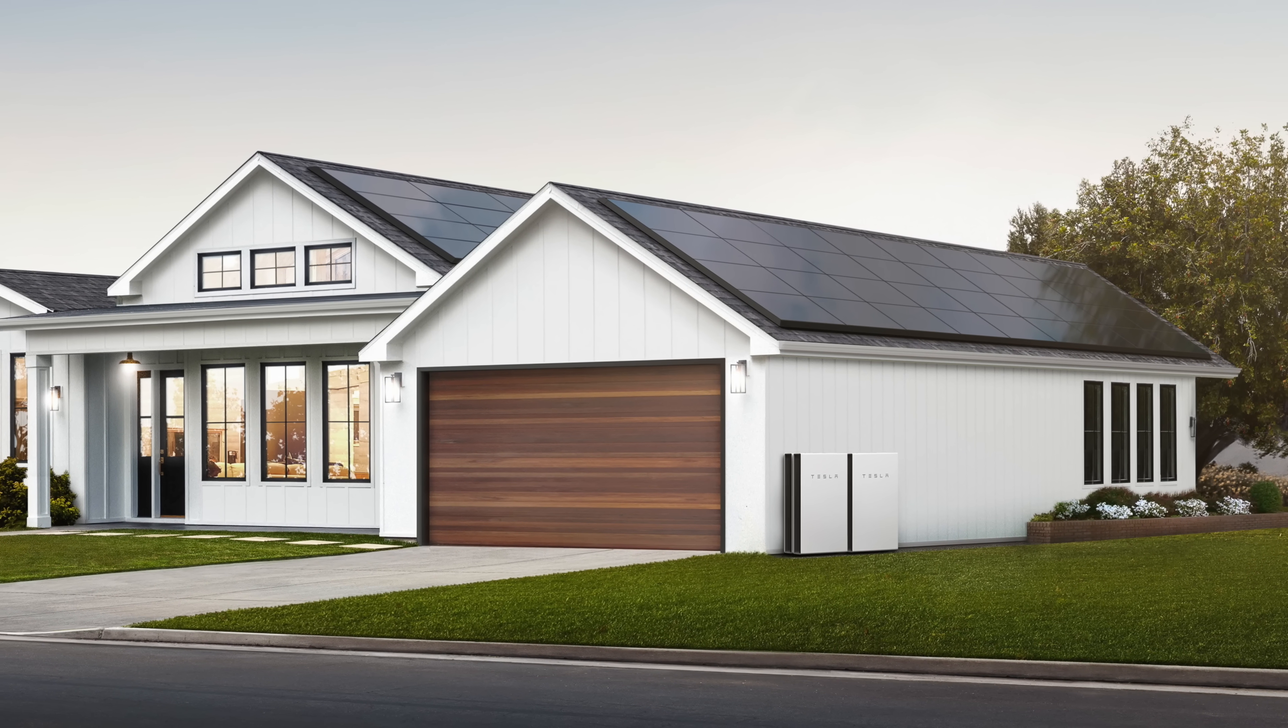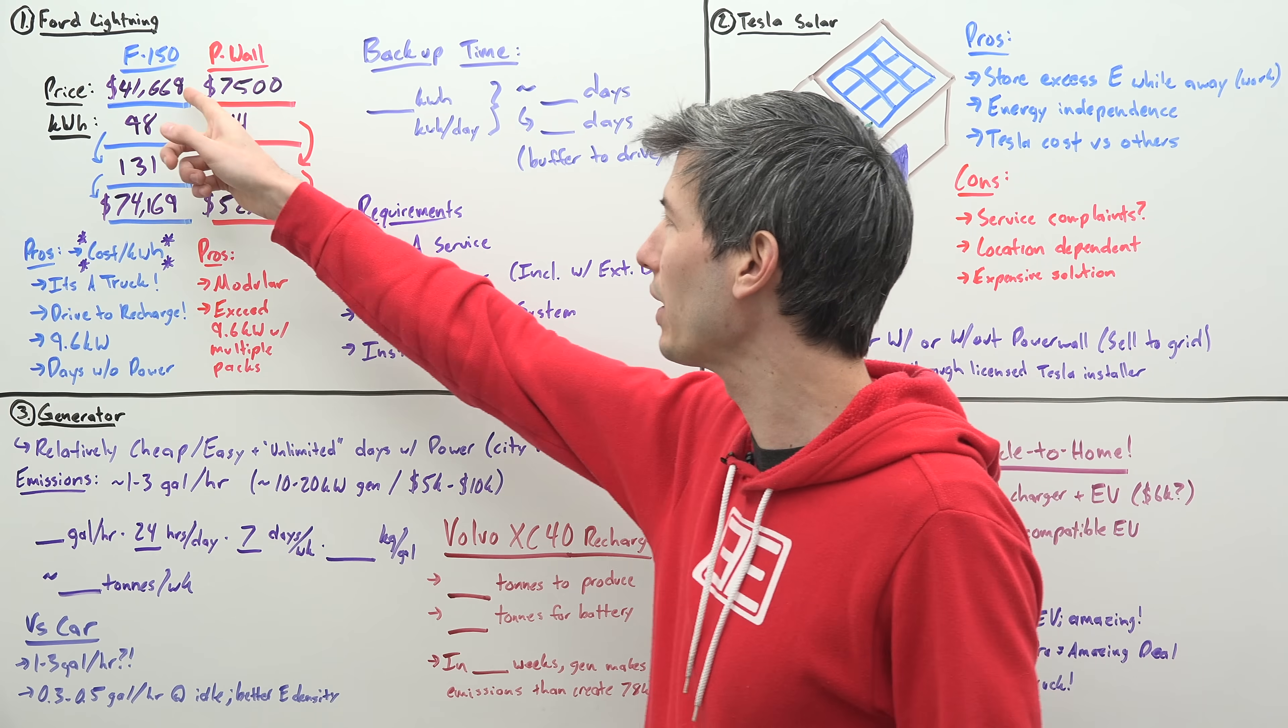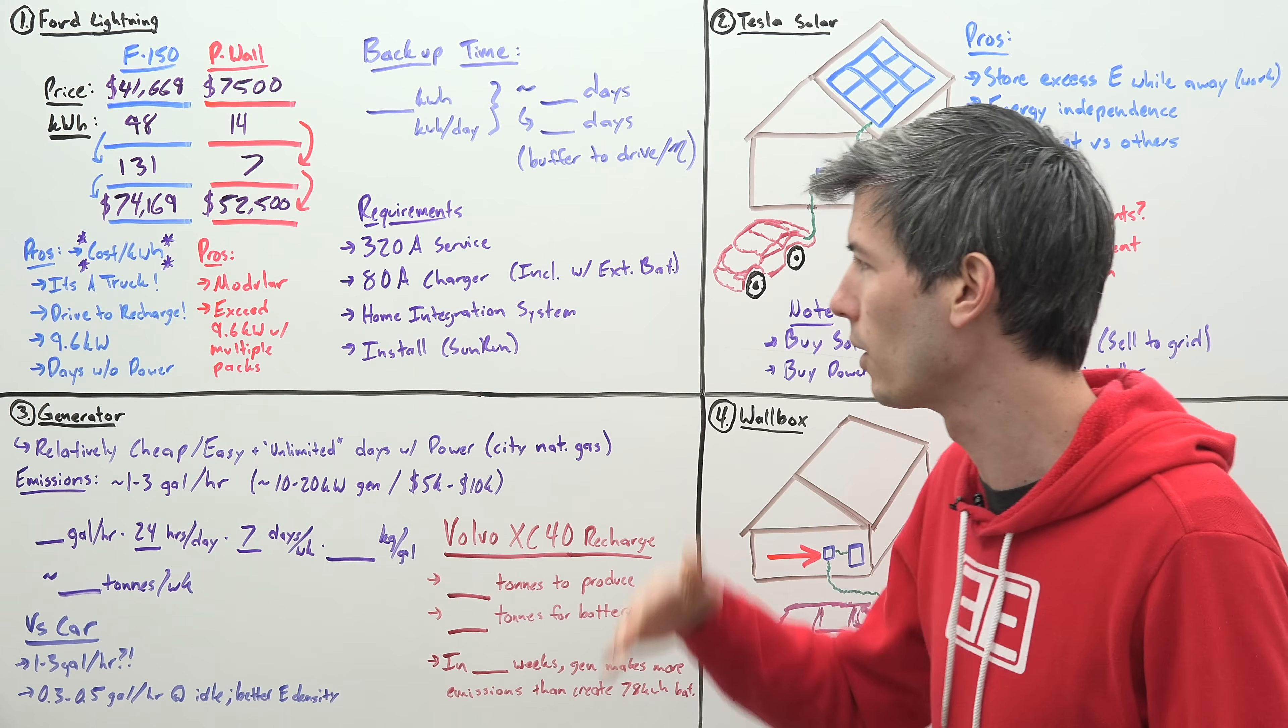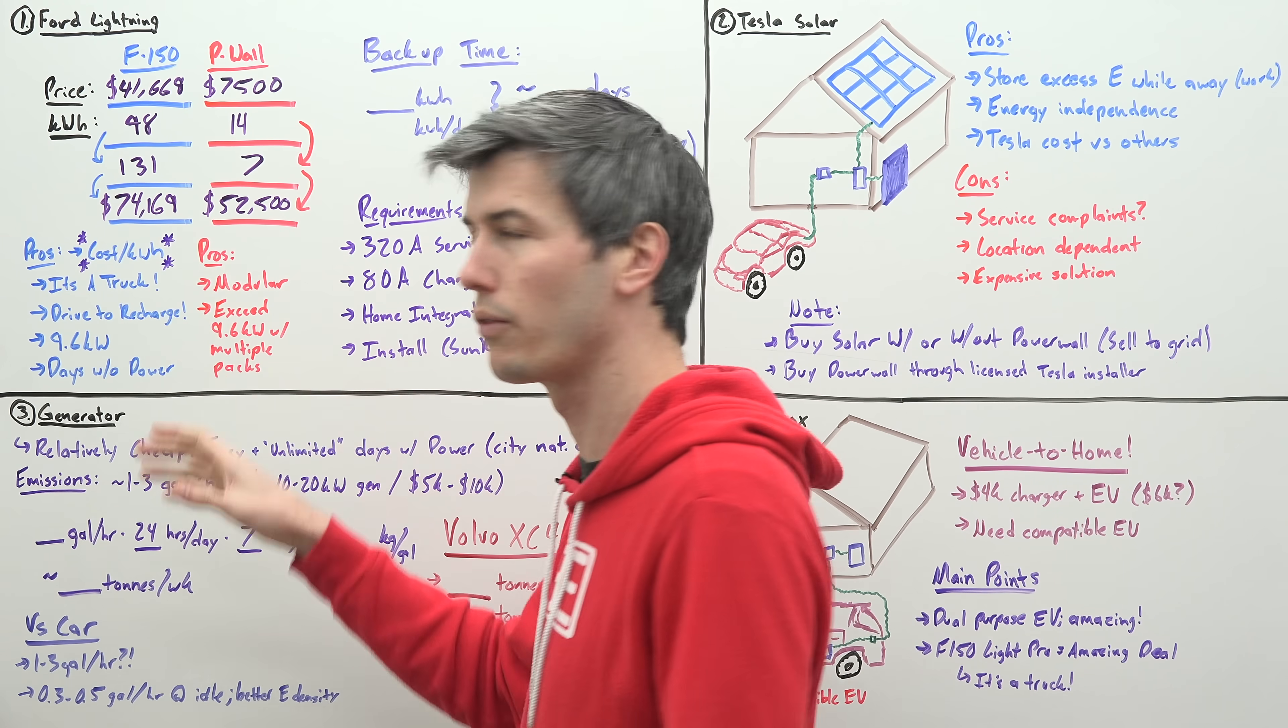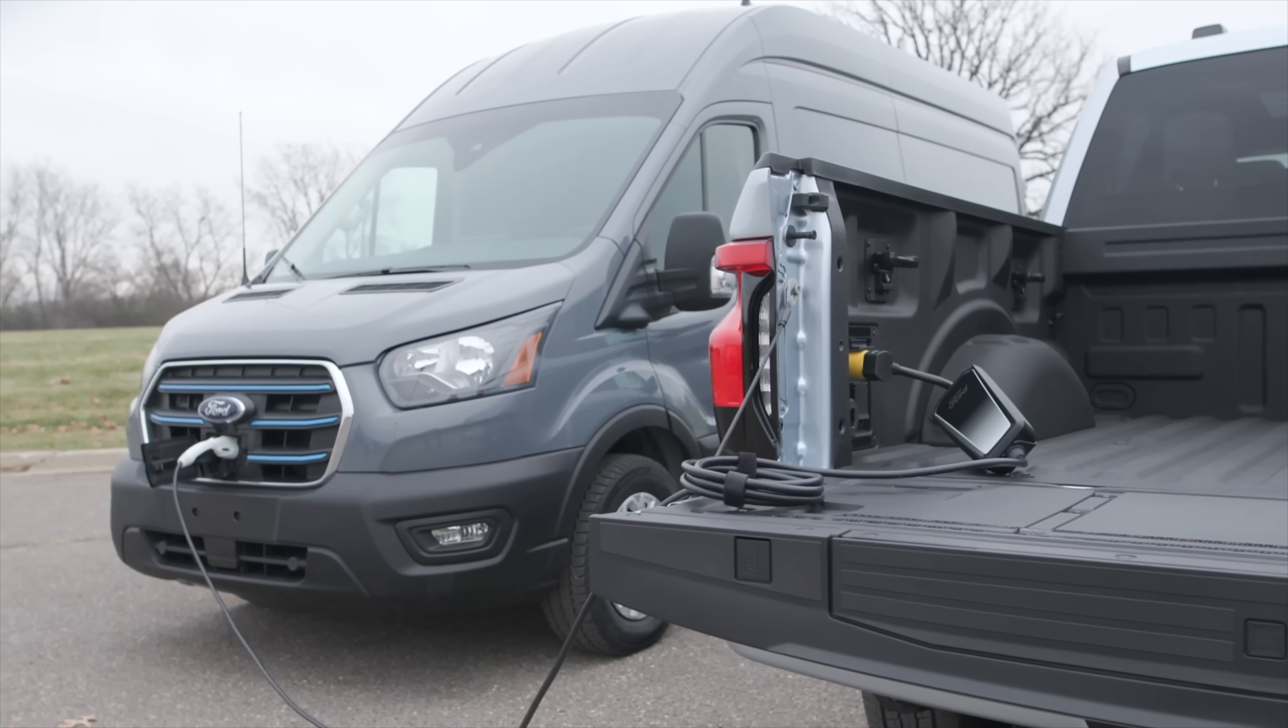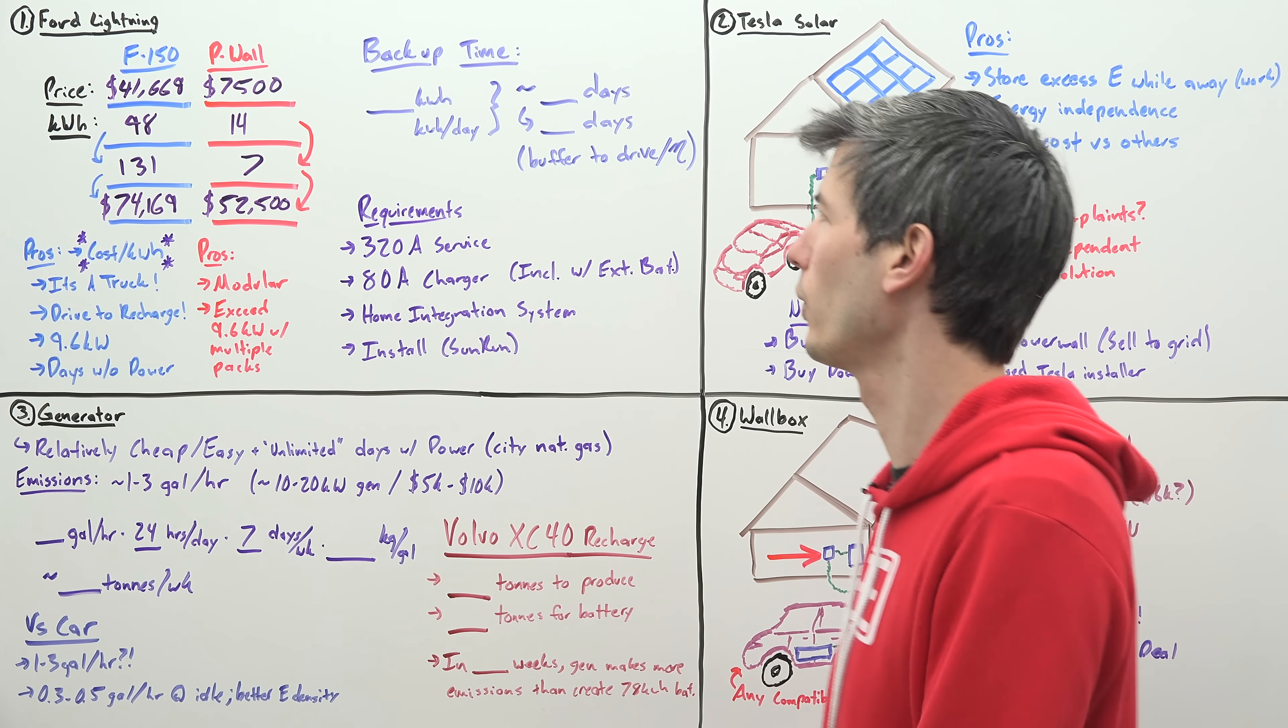But starting with our advantages of our Powerwall, it's modular. You don't have to buy seven of these things. You could just buy three. Now, the disadvantage there is if you're just buying three, you're going to be spending about 25 grand. You're getting pretty close to this price, and you don't have that much time that you actually back up your home when you start getting into the math behind it. I think the huge advantage with the Tesla Powerwall is the more of them you get, you can exceed that 9.6 kilowatt that the Ford F-150 is limited.